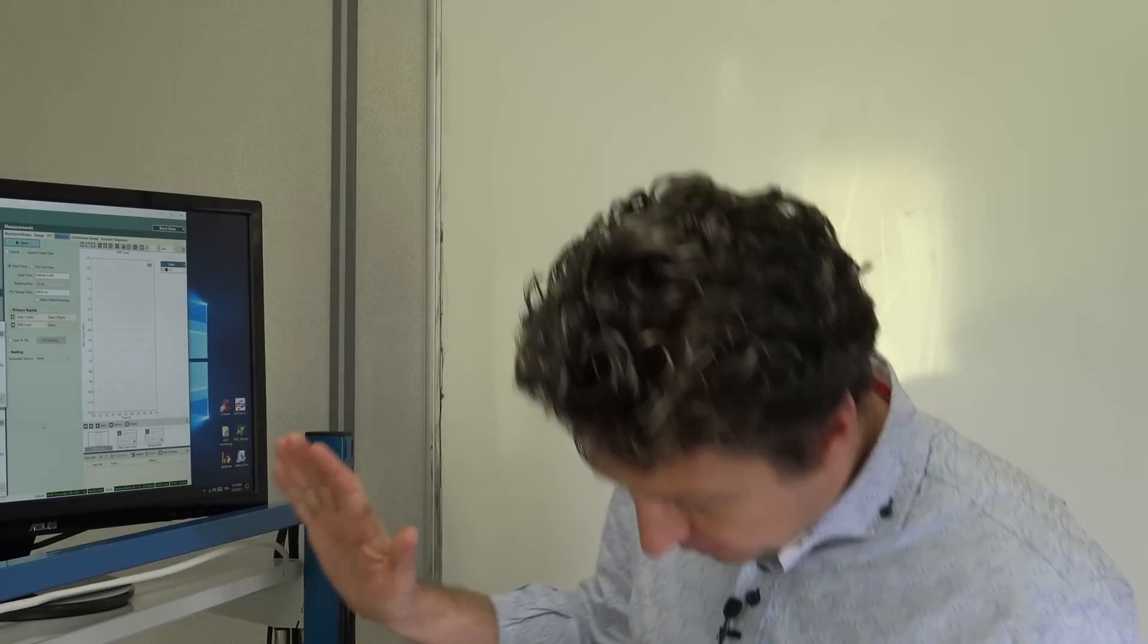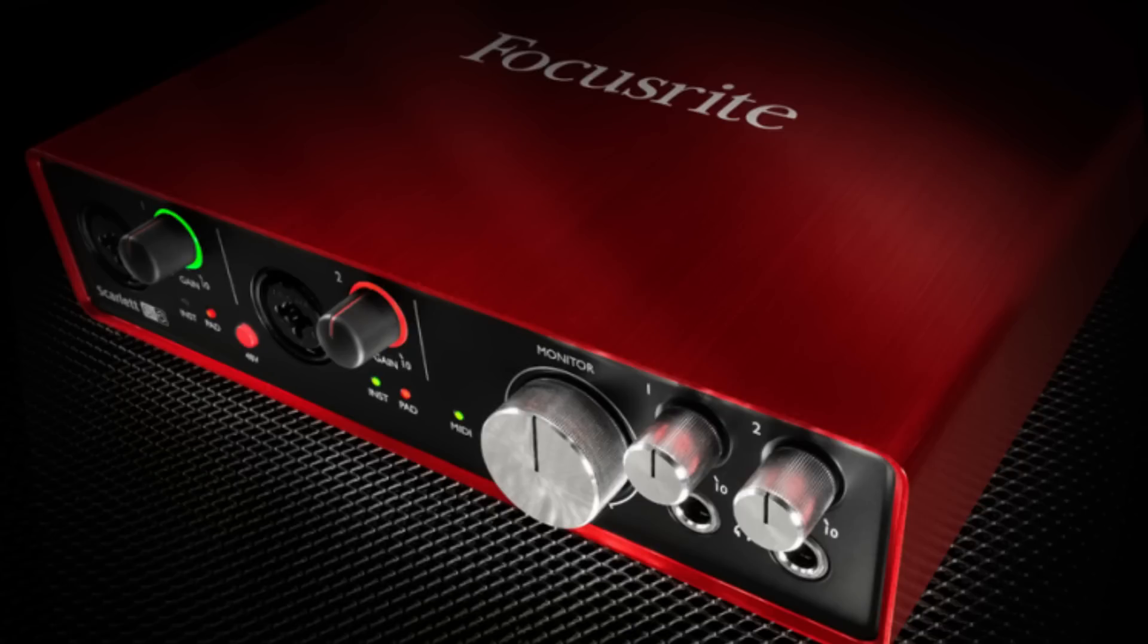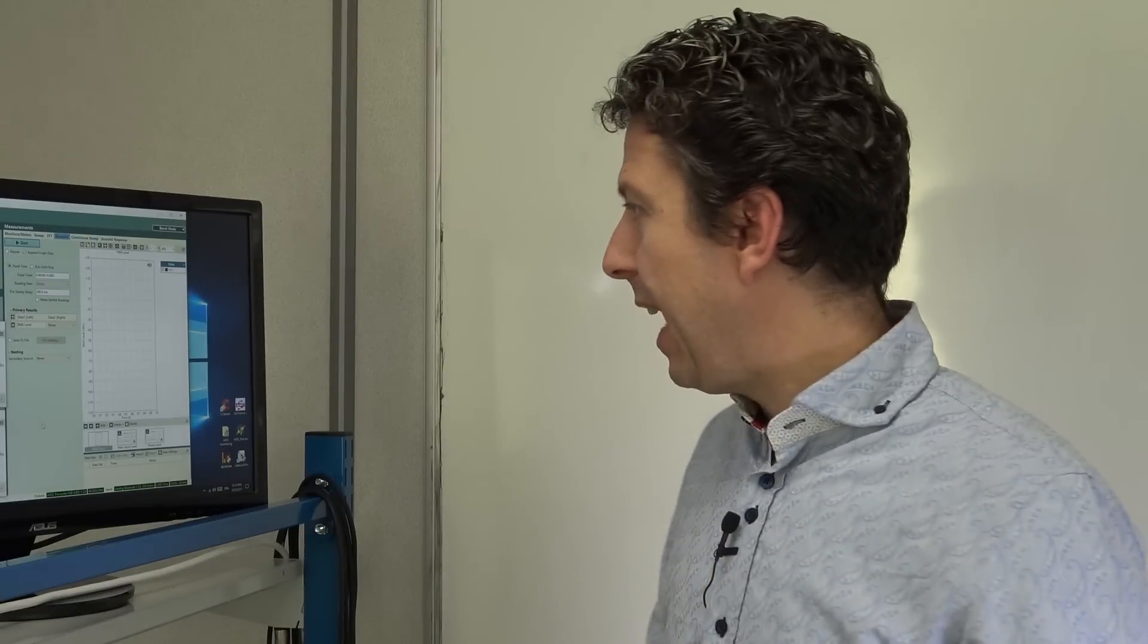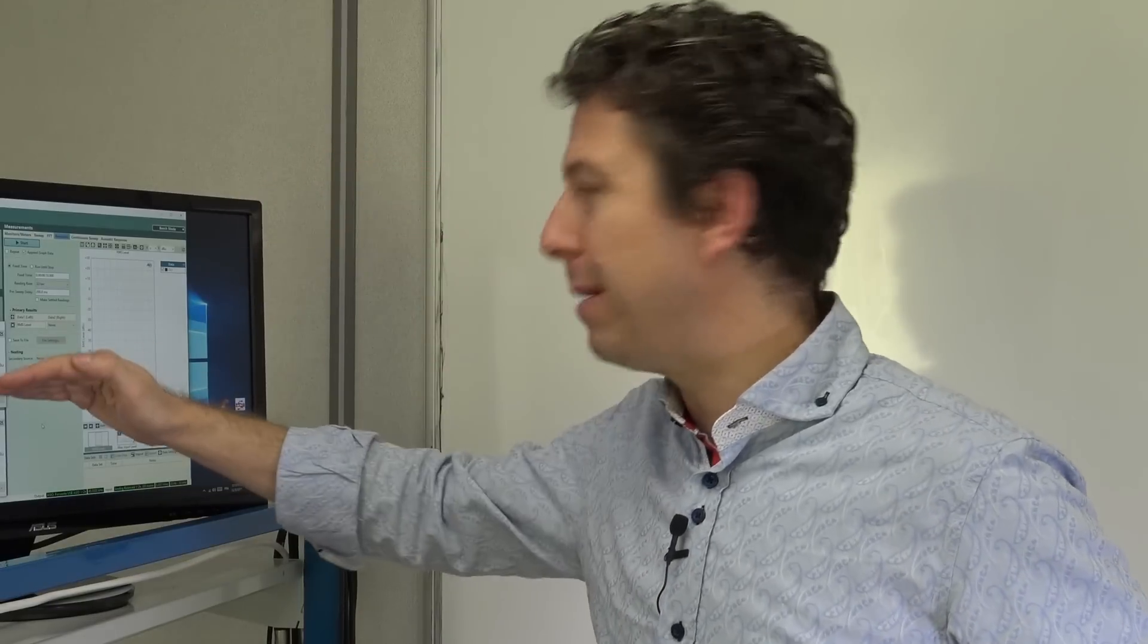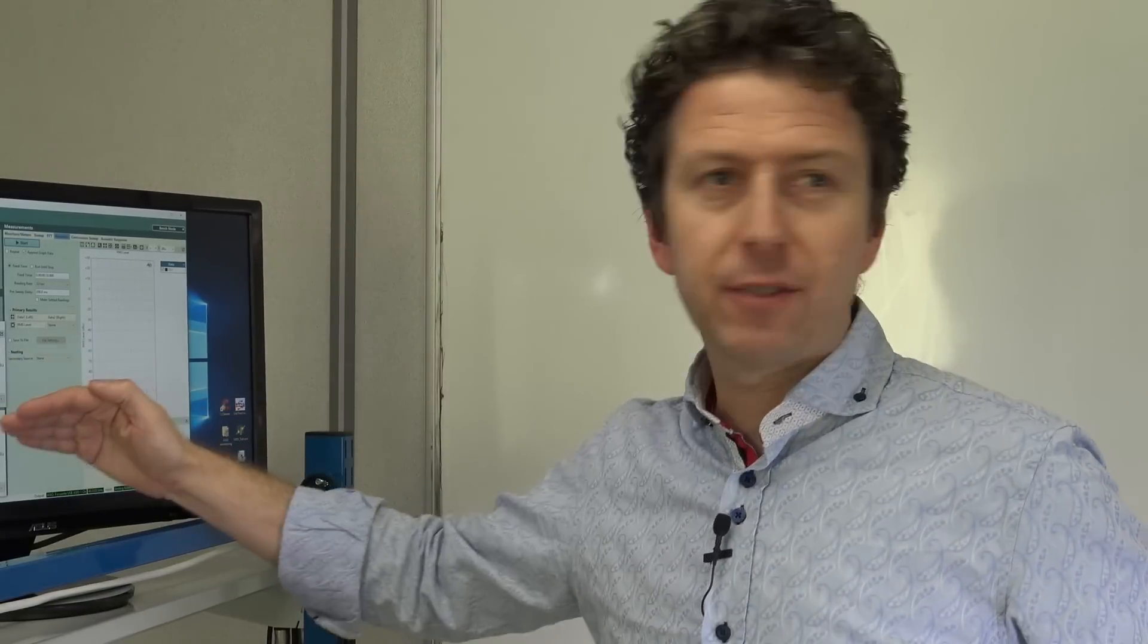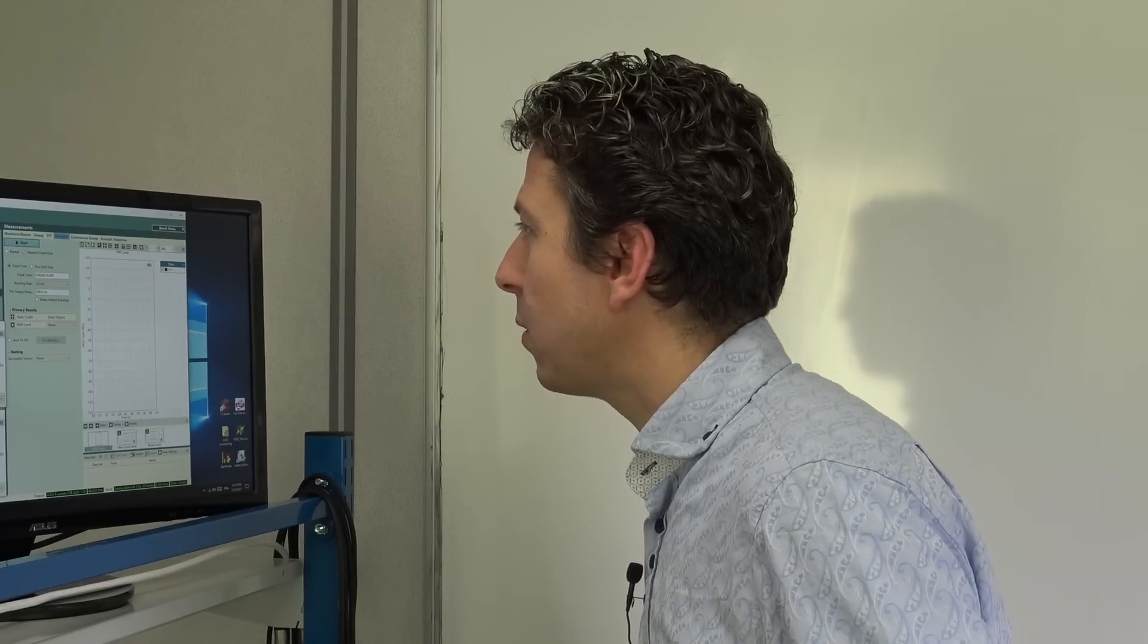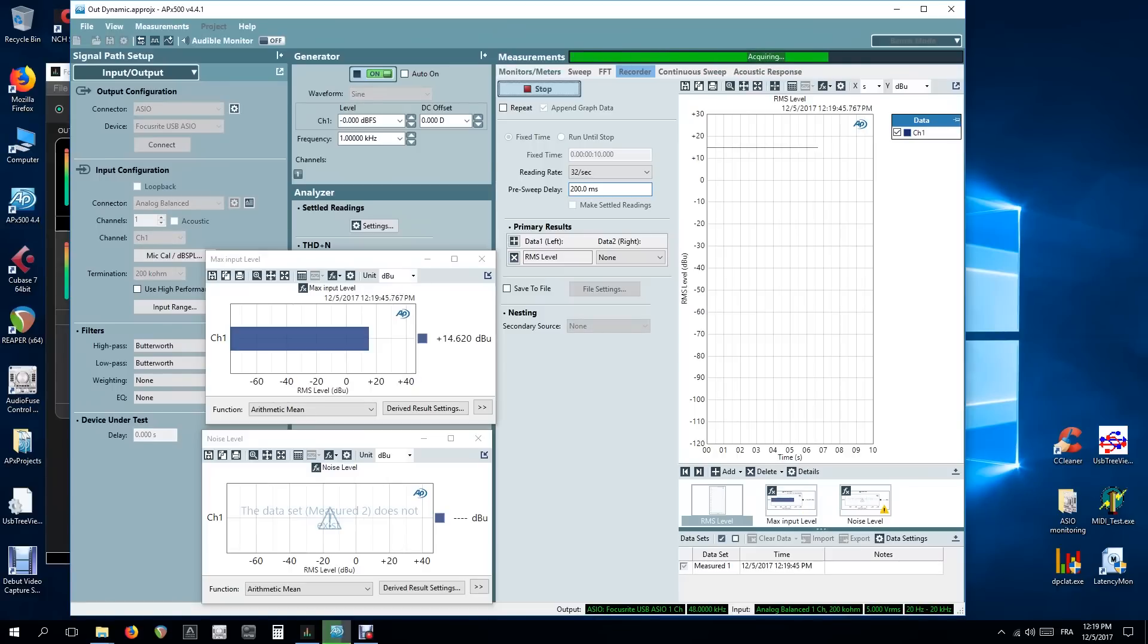So our final test is the output dynamic range and we are starting with the Focusrite 6i6. Now this is by far the cheapest of the four units we're testing and you might ask why do one so cheap? Well quite frankly we want to see if there is any point in going from a 200 euro interface up to a 600, 700, or 1400 euro interface. So once again we get a maximum input level, we get a noise figure, we subtract the two and we get a dynamic range figure. So let's start with the input figure.